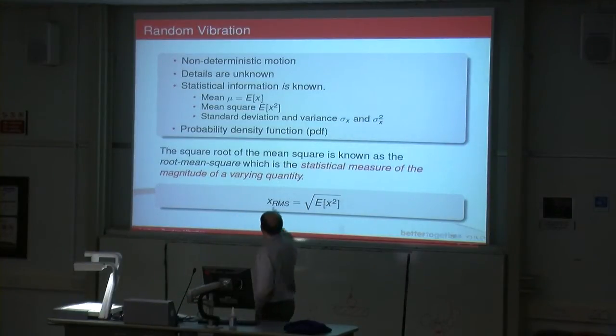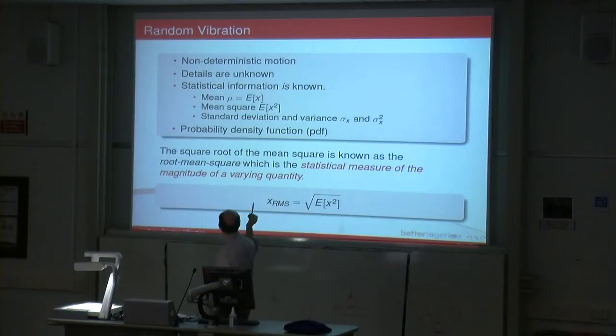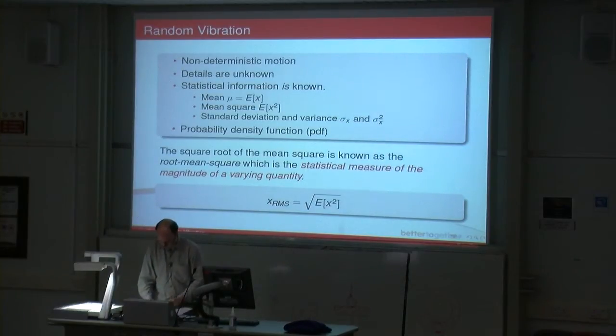The important value that comes out of this is that if you take the square root of the mean square, you get this thing called the root mean square, which is the statistical measure of magnitude of a varying quantity. That gives you an indication of the magnitude of the random vibration. You want to avoid large values for RMS to make sure your system survives.